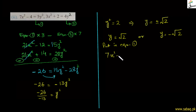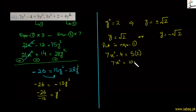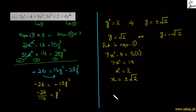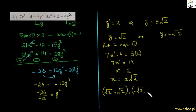y = √2 کو equation میں put کریں — 7x² − 4 = 5 × 2 = 10۔ تو 7x² = 14، x² = 2، x = ±√2۔ دو order pairs ملتے ہیں: (√2, √2) اور (−√2, √2)۔